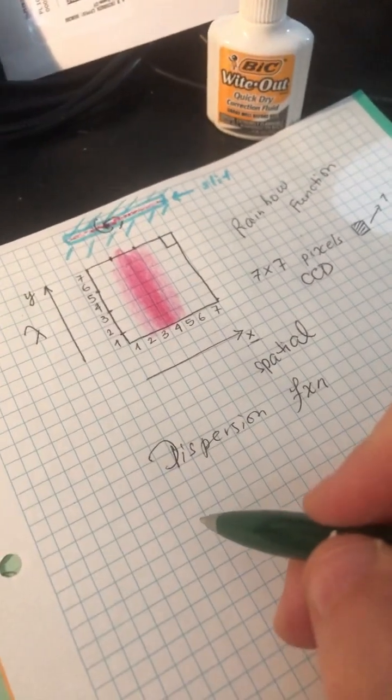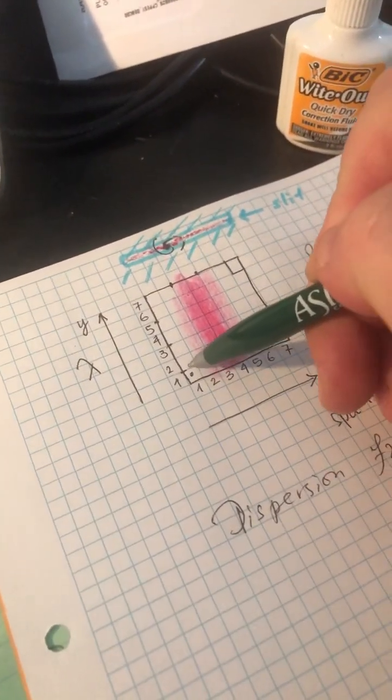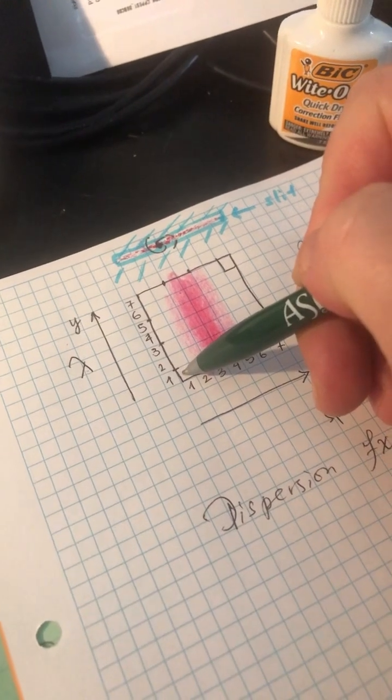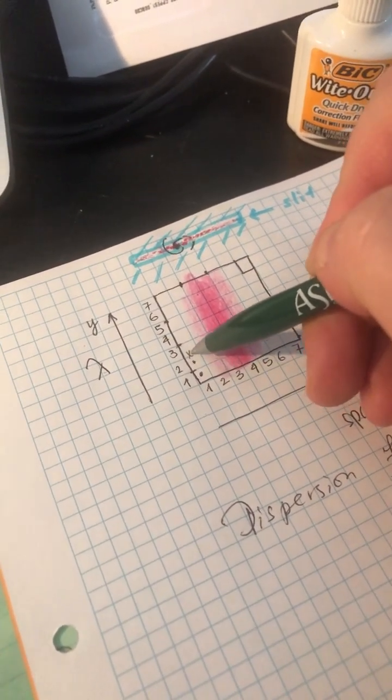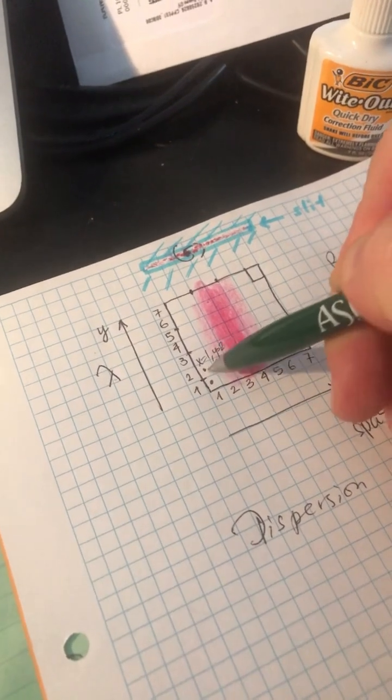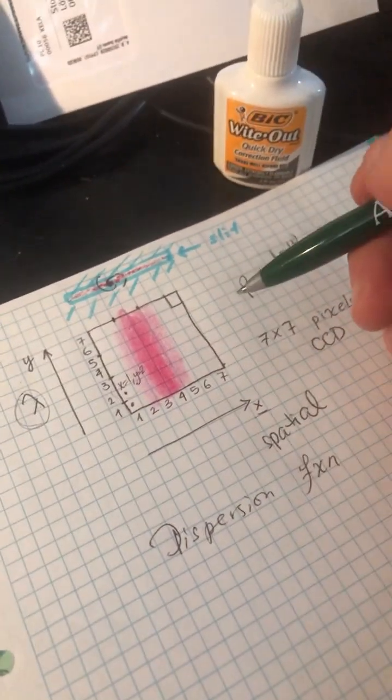Coordinates (1,1), this one is (1,2), right? X equals 1, Y equals 2. But what is it in terms of wavelengths? So this is a 2D situation.